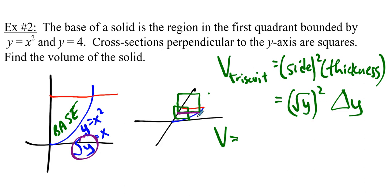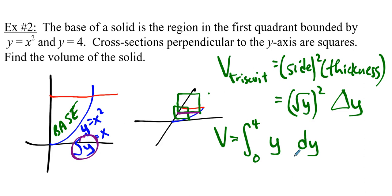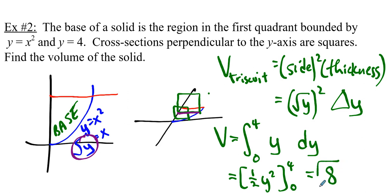That's true for any Triscuit up and down the line. We run a Riemann sum — as we get more and thinner Triscuits, we take the limit and get an integral from the lowest y to the highest y, from 0 to 4. Square root of y squared is just y, and delta y becomes dy. Taking the antiderivative, substituting, and subtracting: 4 squared over 2 is 8.